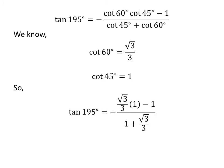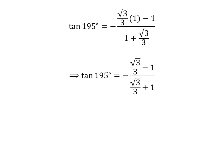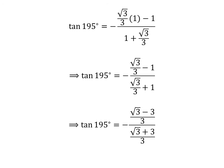We get tangent of 195 degrees is equal to minus square root of 3 upon 3 times 1, minus 1, upon 1 plus square root of 3 upon 3. Further simplification gives us tangent of 195 degrees is equal to minus square root of 3 upon 3, plus 1. Addition of fractions gives us tangent of 195 degrees is equal to minus square root of 3 minus 3 upon 3, over square root of 3 plus 3 upon 3.